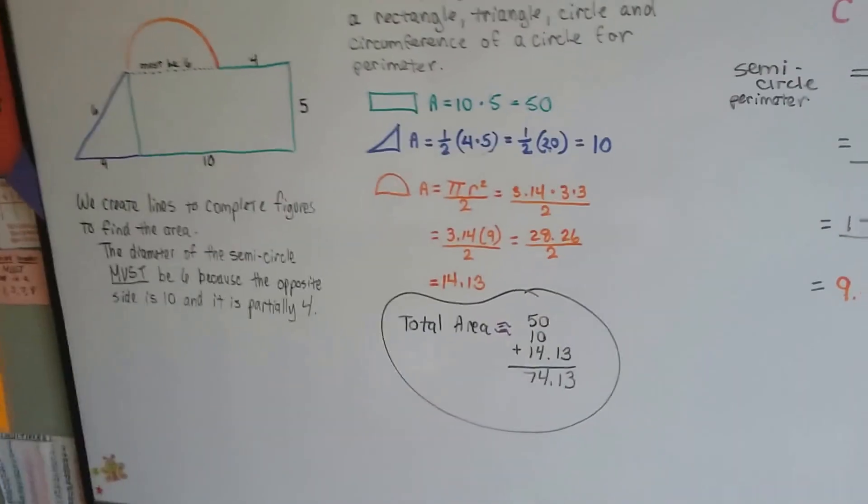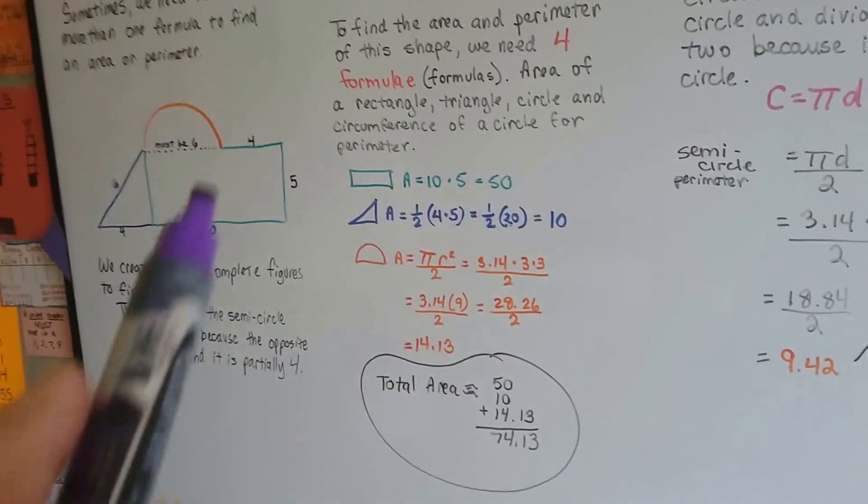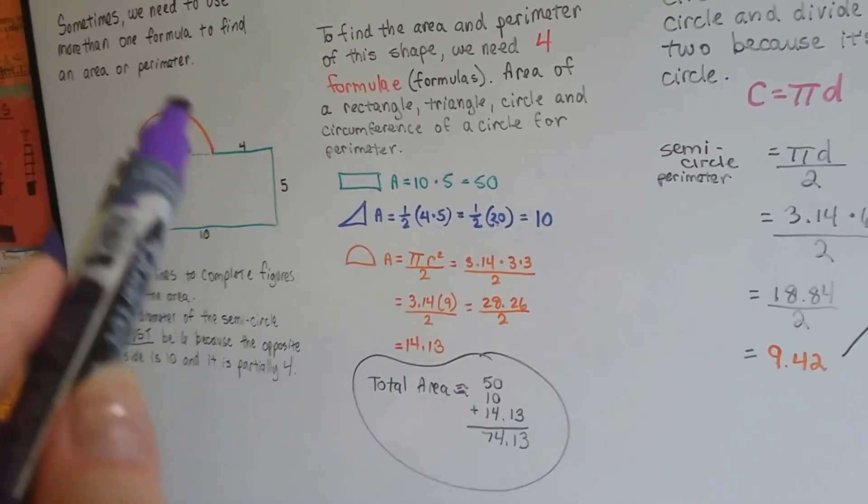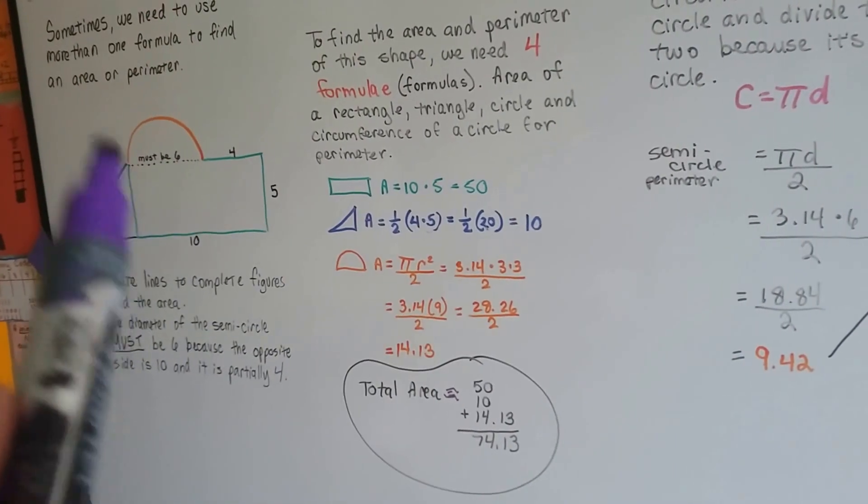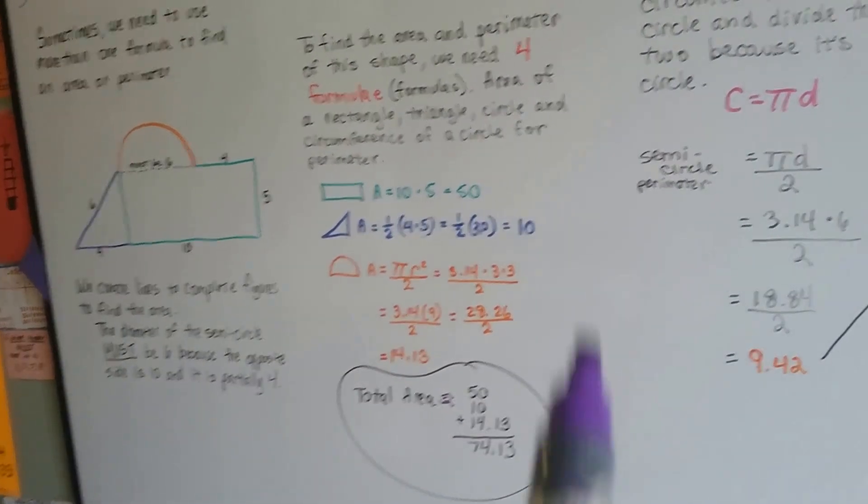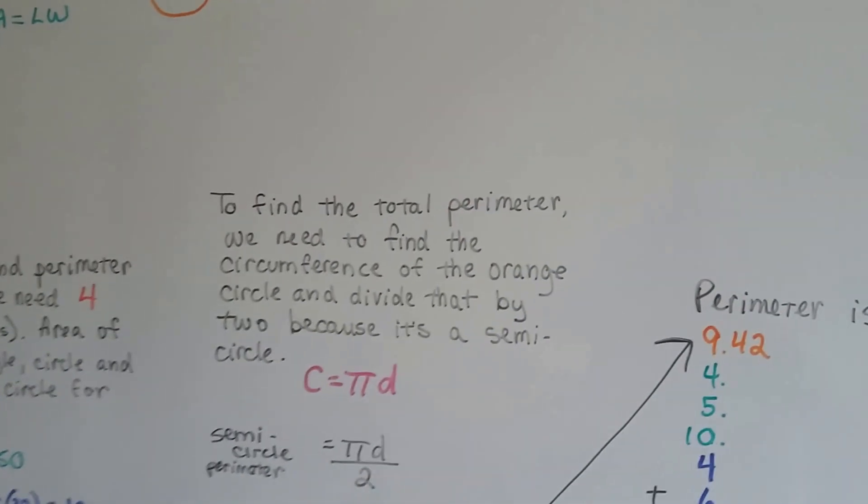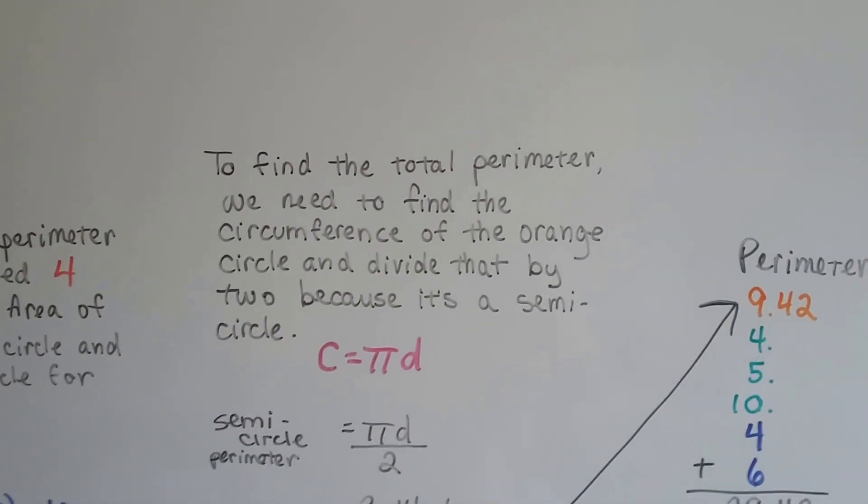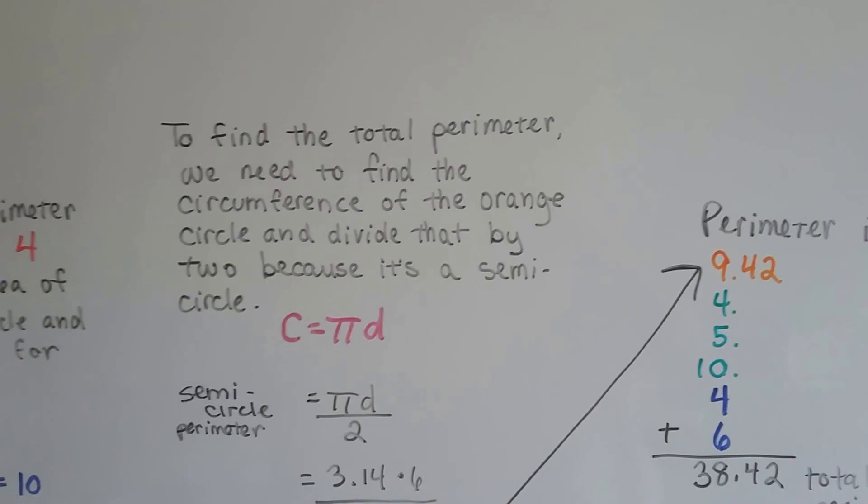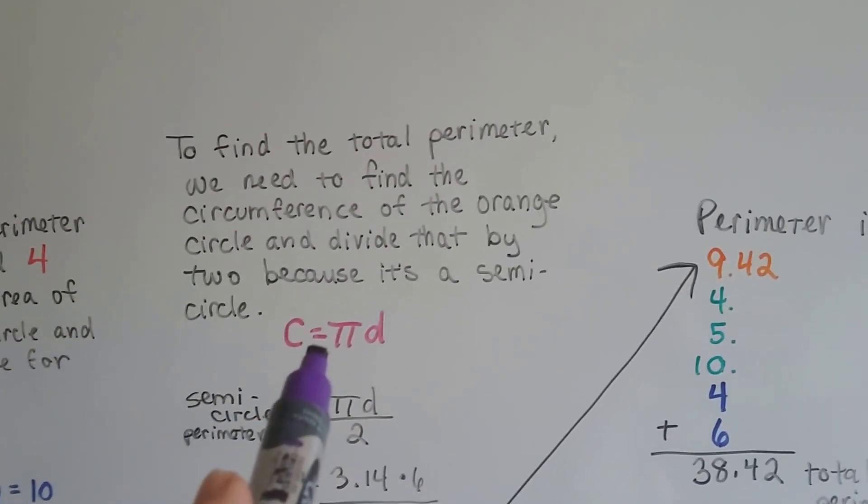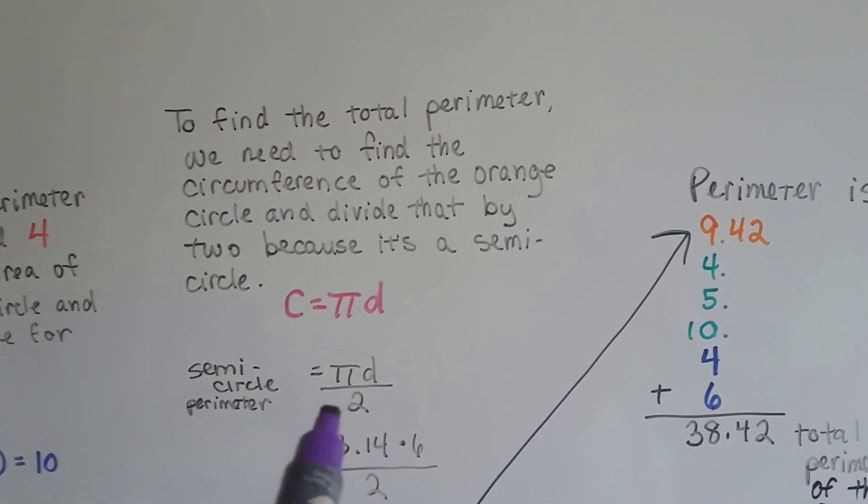So now we've got the area, but we still need to find the perimeter. Now we could easily do it with these shapes here, but when we get to the half circle, we need to do circumference, and then we're going to have to cut it in half because it's a half circle. So to find the total perimeter, we need to find the circumference of the orange circle and divide that by 2 because it's a semicircle. So that's the formula for the circumference of a circle.